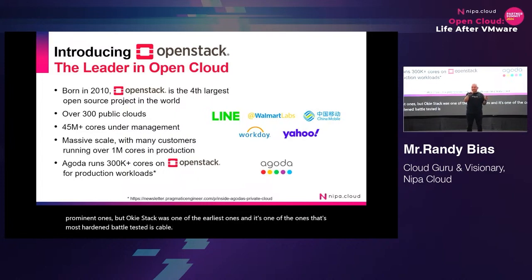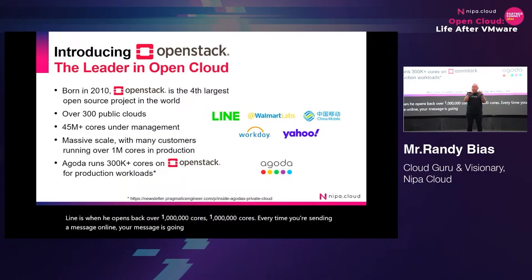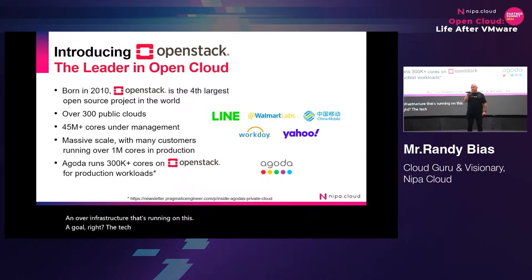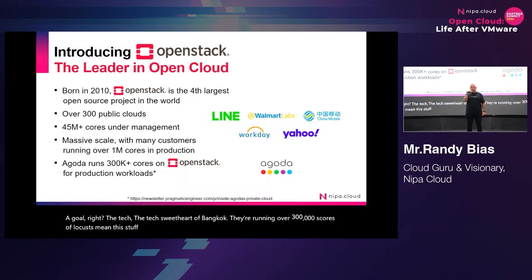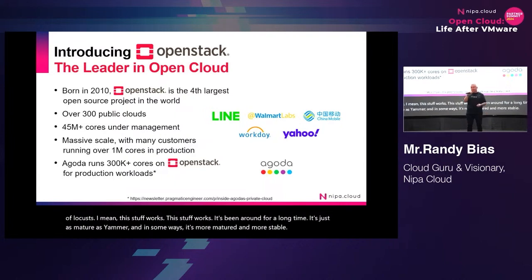I'm sure everybody here has Line on their phone. Line is running OpenStack over one million cores. Every time you're sending a message on Line, your message is going through infrastructure running on OpenStack. Agoda — the tech sweetheart of Bangkok — is running over 300,000 cores of OpenStack. This stuff works. It's been around for a long time. It's just as mature as VMware, and in some ways it's more mature, more stable, and certainly more open.